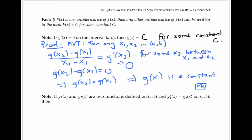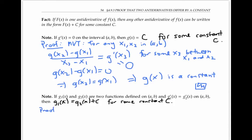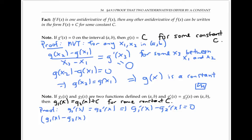The second observation I want to make is that if g₁ and g₂ are two functions which have the same derivative, then g₁(x) must equal g₂(x) plus C for some constant C. This statement follows from the previous statement, because if g₁'(x) is equal to g₂'(x), then g₁'(x) minus g₂'(x) must equal zero. That means if I look at the function g₁(x) minus g₂(x) and take its derivative, that has to equal zero, since the derivative of the difference is the difference of the derivatives.